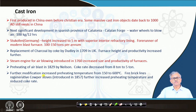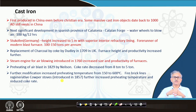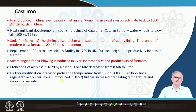Then came the preheating of the air blast in 1829 by Neilson. This is very interesting because if you can preheat the air, you can supply a lot of sensible heat through the air and supplement some of the heat supplied by coke. As a result, the coke rate decreased — from 8 tons to 5 tons. Further modification increased the preheating temperature from 150 to 600°C, and the firebrick lining regenerative Cowper stove for preheating the air blast came in 1857 — mid-19th century.